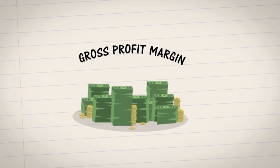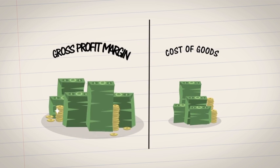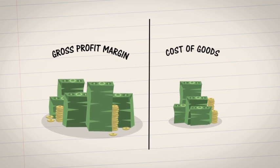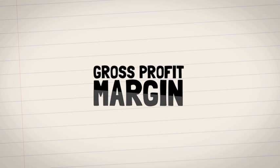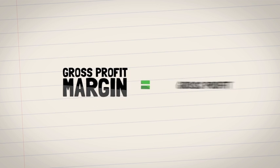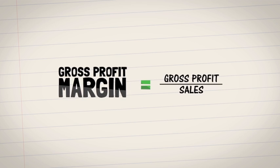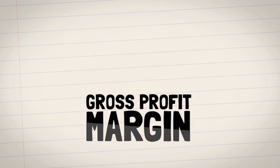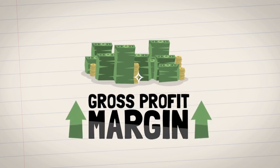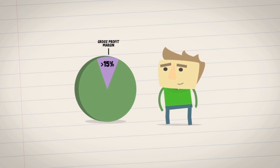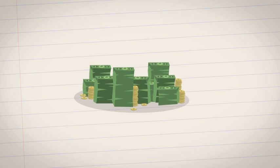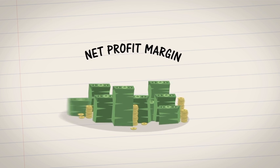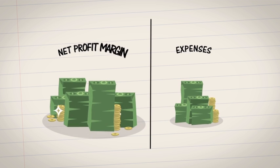The first ratio is gross profit margin. This represents the proportion of money left over after subtracting the cost of goods sold. To calculate gross profit margin, take gross profit and divide by sales. The higher the margin, the more profitable a company is. Margins of 15% or more are considered good.